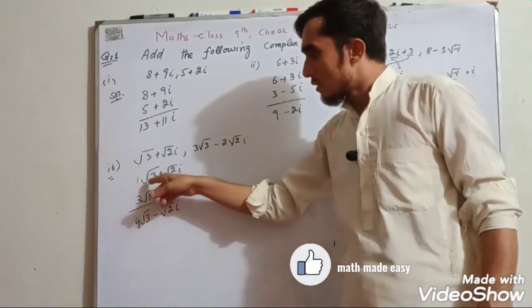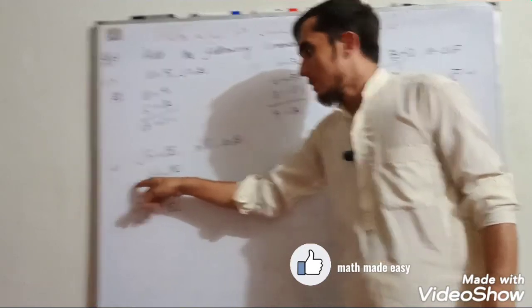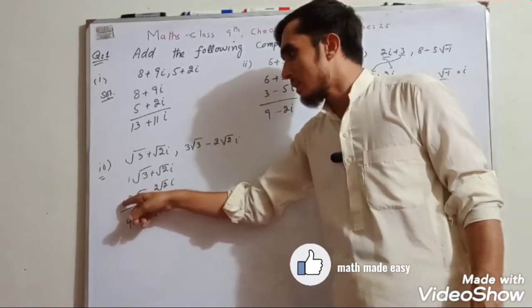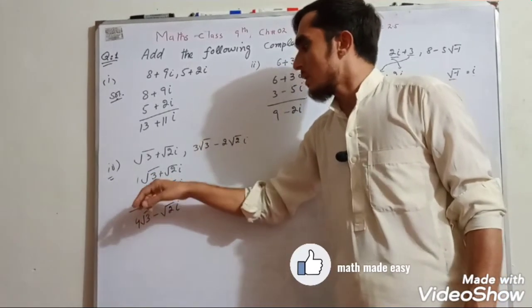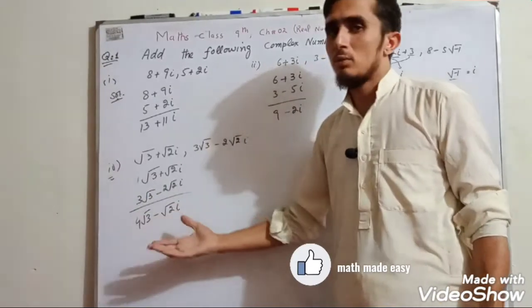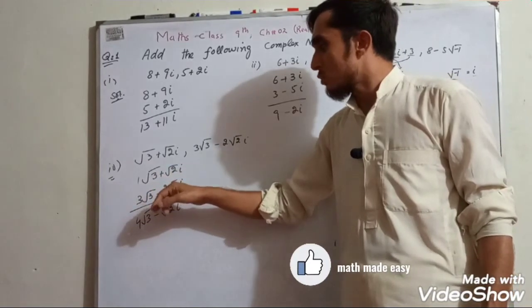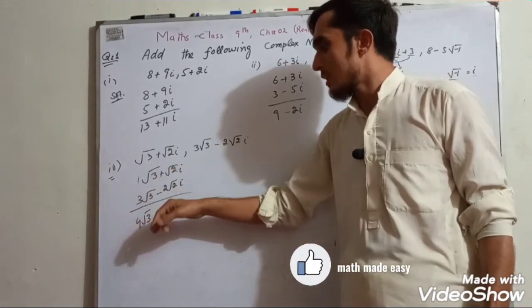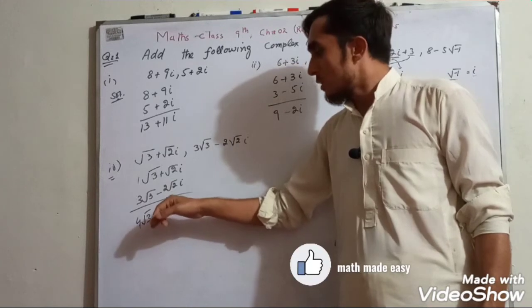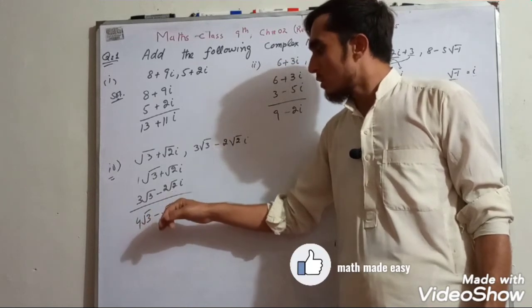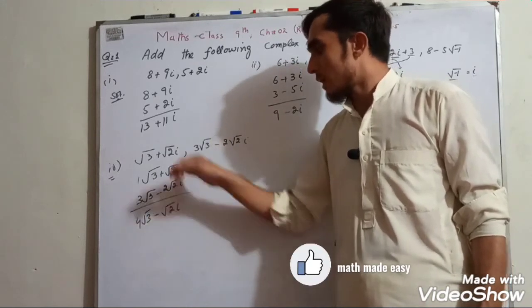Root 3 plus root 3 is 2 root 3. Root 2 combined gives the final answer.